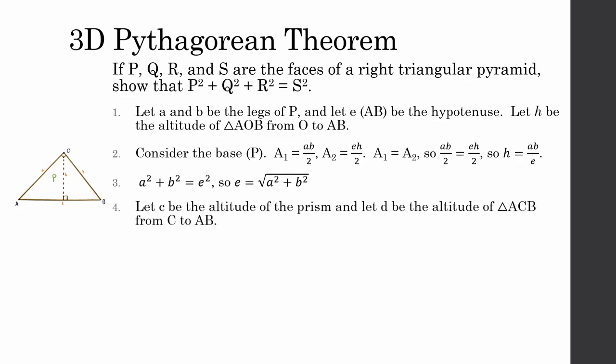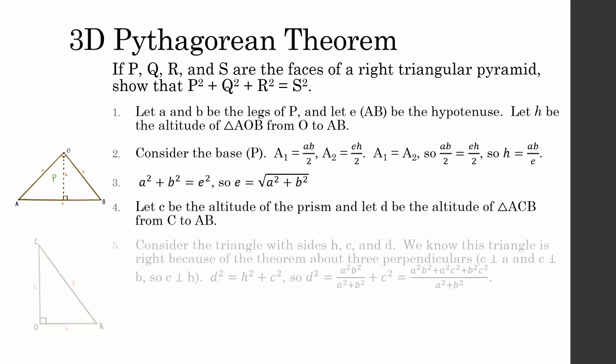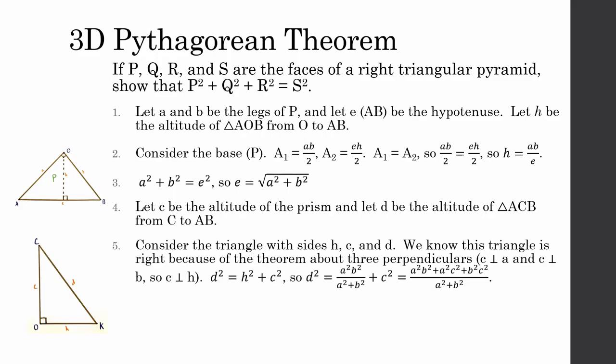Let C be the altitude of the prism, and let D be the altitude of triangle ACB from point C to the line AB. Now let's consider a different triangle with sides H, C, and D. We know this triangle is right by the theorem about three perpendiculars. D squared equals H squared plus C squared by the Pythagorean theorem, so substituting for H squared, we get D squared equals A squared B squared over (A squared plus B squared) plus C squared. All of that is equal to (A squared B squared plus A squared C squared plus B squared C squared) over (A squared plus B squared).